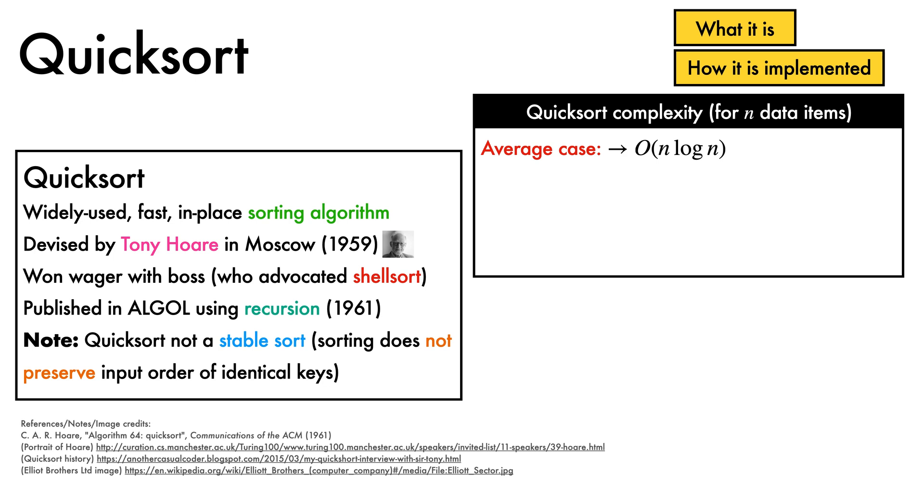When sorting n data items, the average case complexity of Quicksort is big O of n log n. However, its worst case complexity is big O of n squared.